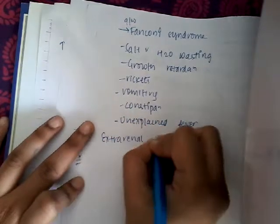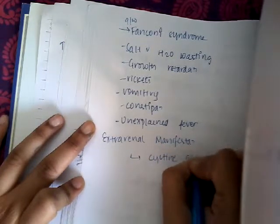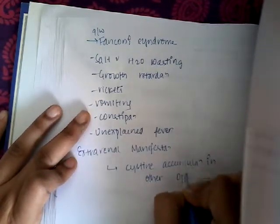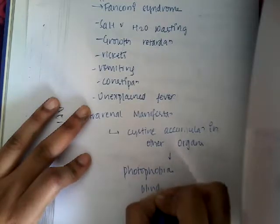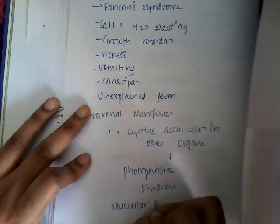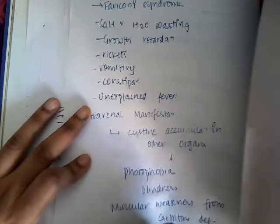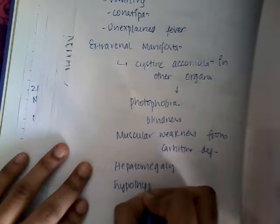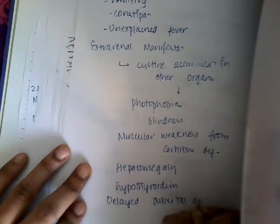Extra-renal manifestations are due to cysteine accumulation in other organs and include: photophobia, blindness, muscular weakness from carnitine deficiency, hepatomegaly due to accumulation in the liver, hypothyroidism, delayed pubertal development, and late-onset neurological disease.